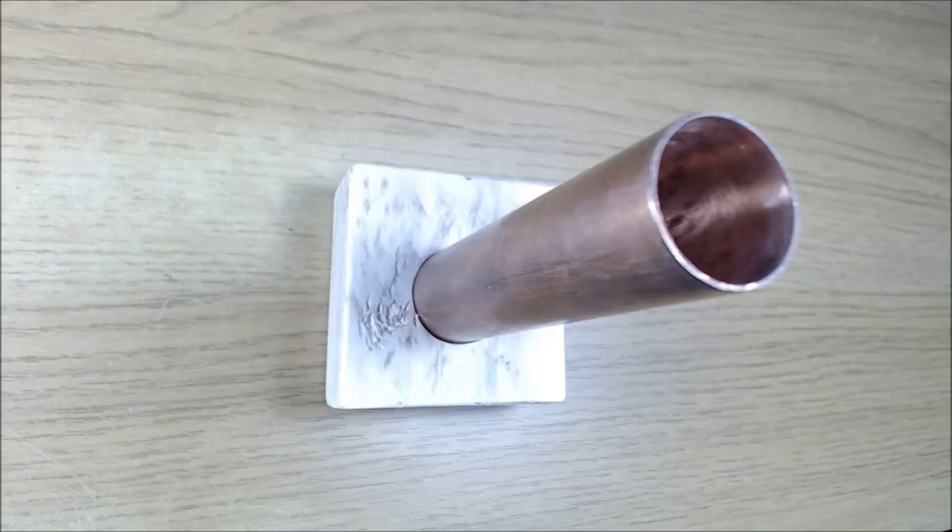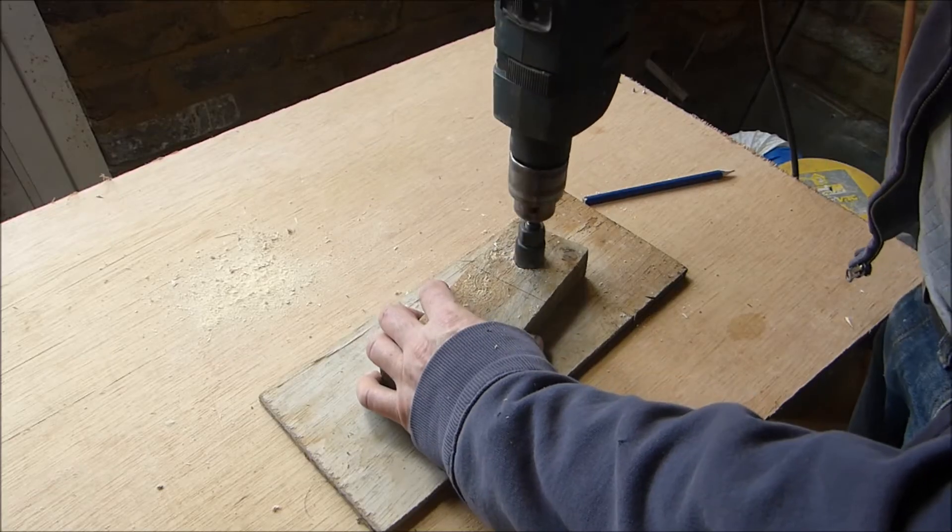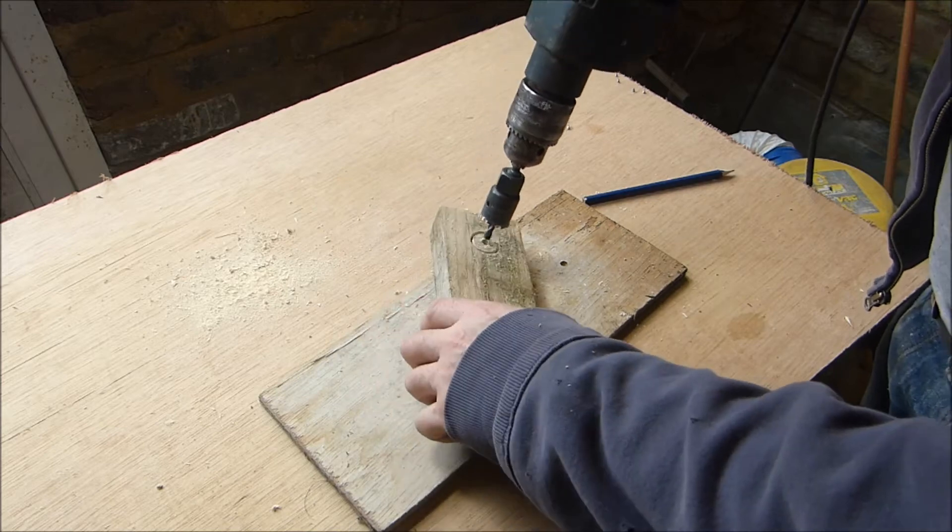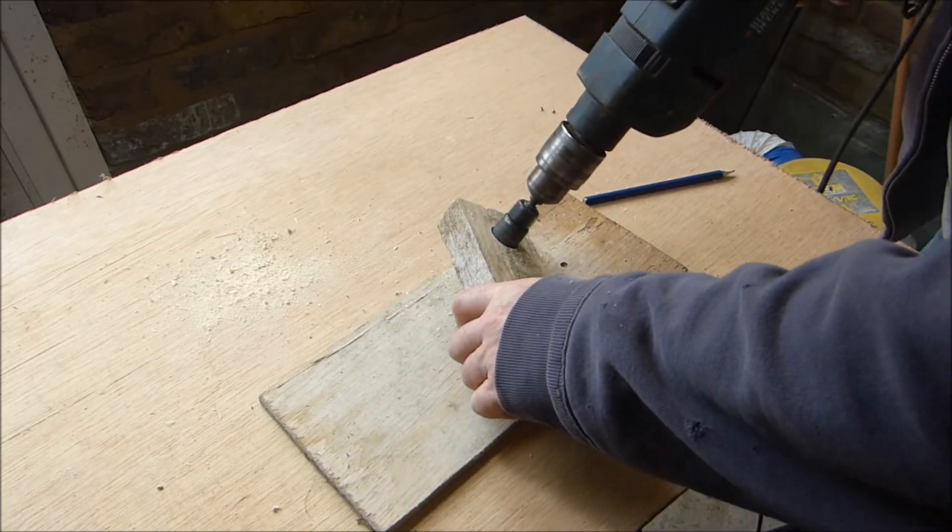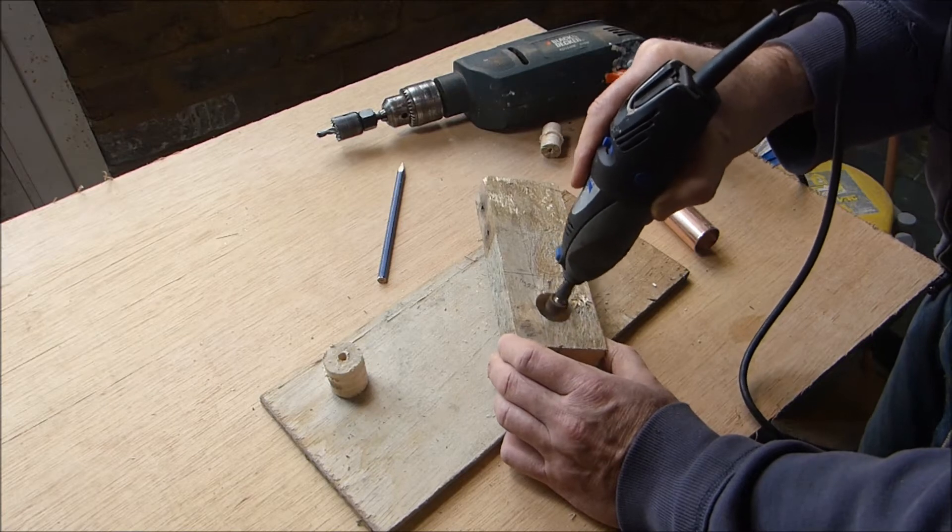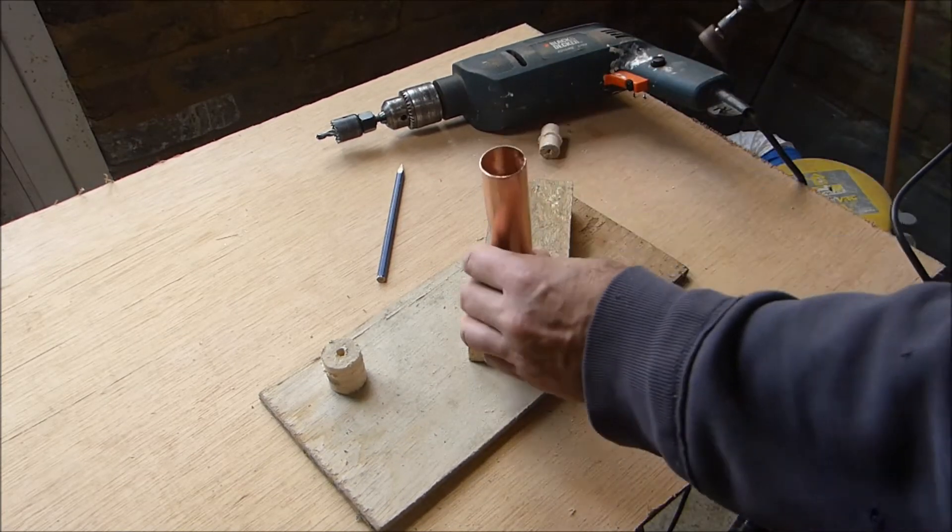The base is made from 28mm copper tubing, which is just over an inch in diameter, and a 70mm or 2 and 3 quarter inch square block of wood. I cut a hole in the wood with a 25mm or 1 inch hole saw. Then I used a dremel with a sanding wheel to increase the diameter of the hole until it accepted the copper tube.